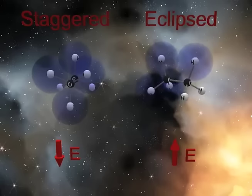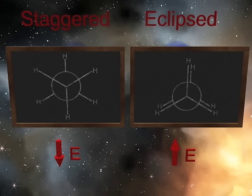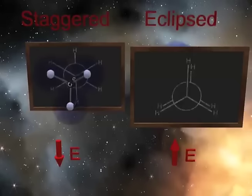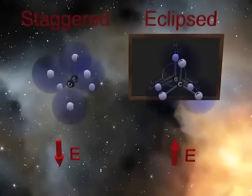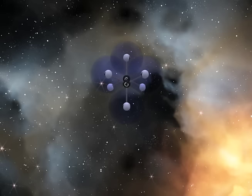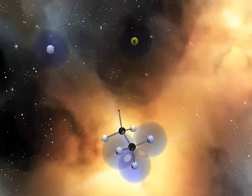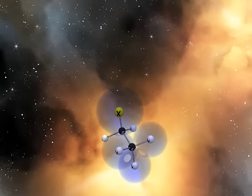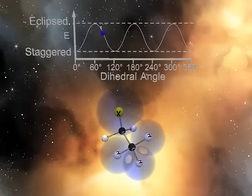It may be easier to remember that atoms want to be as far apart from each other as possible — think of it as less crowding. When molecules are viewed down the C-C sigma bond, we call this a Newman projection. Often you may see your instructor represent the Newman projection on the blackboard as follows. When we replace one of the hydrogen atoms with an atom that has a larger atomic radius than hydrogen, steric factors will arise, which will increase the barrier of rotation. As the dihedral angle changes, so does the relative stability of the molecule.